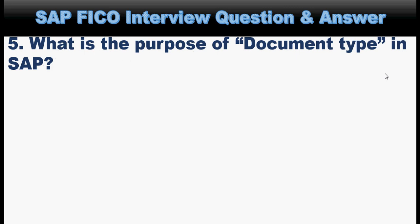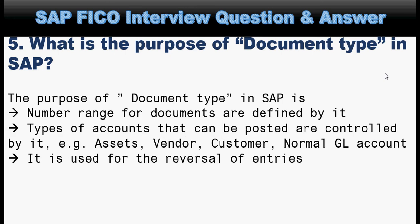Next question: what is the purpose of document type in SAP? The purpose of document type in SAP is that number ranges for document types are defined by it, and the types of accounts that can be posted are controlled by it — for example, asset accounting, vendor type, customer type, and normal GL account transactions. It is also used for the reversal of entries.